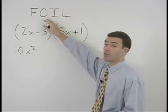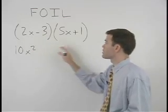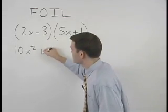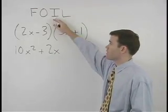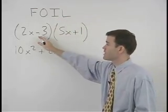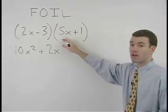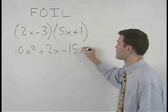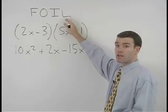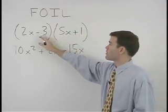product of the outer terms, which is 2x times positive 1 or positive 2x, plus the product of the inner terms, which is negative 3 times 5x or negative 15x, plus the product of the last terms, negative 3 times